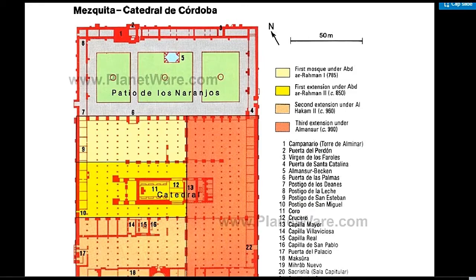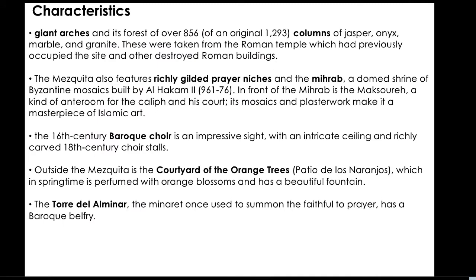Characteristics of the Cordoba Mosque in Andalusia, Spain: it has giant arches and a forest of over 856 columns of jasper, onyx, marble, and granite, taken from the Roman temple which had previously occupied the site and other destroyed Roman buildings. The Mezquita also features a richly gilded prayer niche and the mihrab, a dome shrine of Byzantine mosaics built by Al-Hakam II in 961–976 AD. In front of the mihrab is the maqsura, a kind of anteroom for the Caliph and his court. Its mosaic and plasterwork make it a masterpiece of Islamic art.